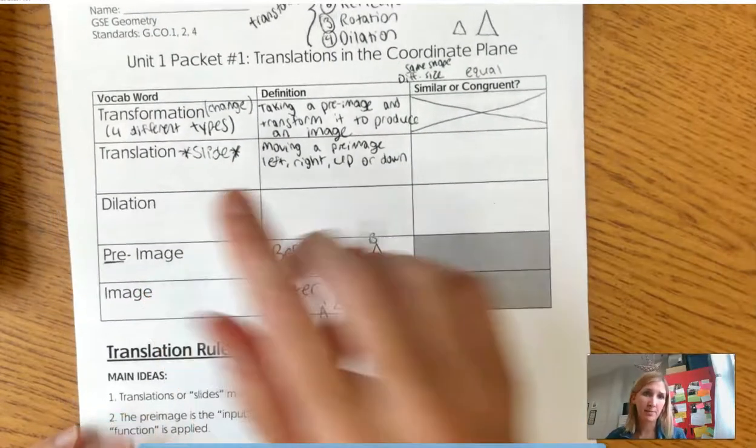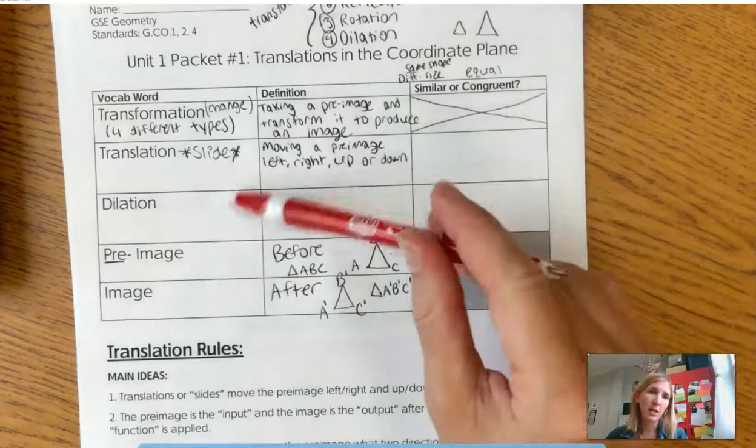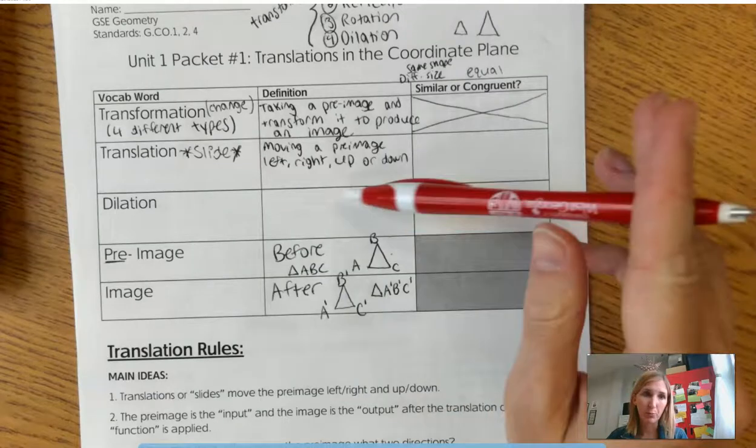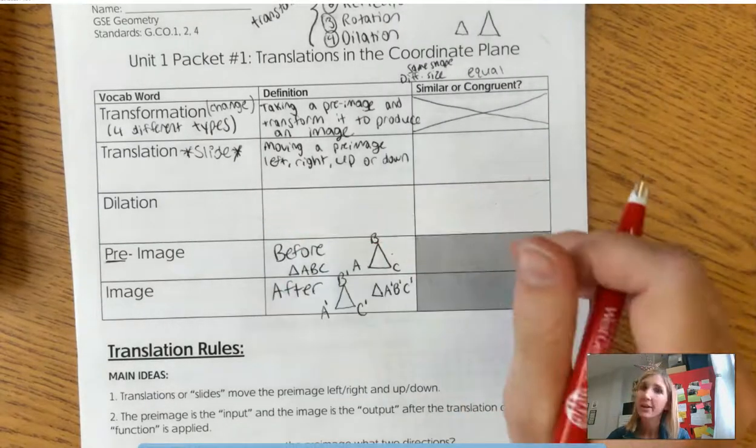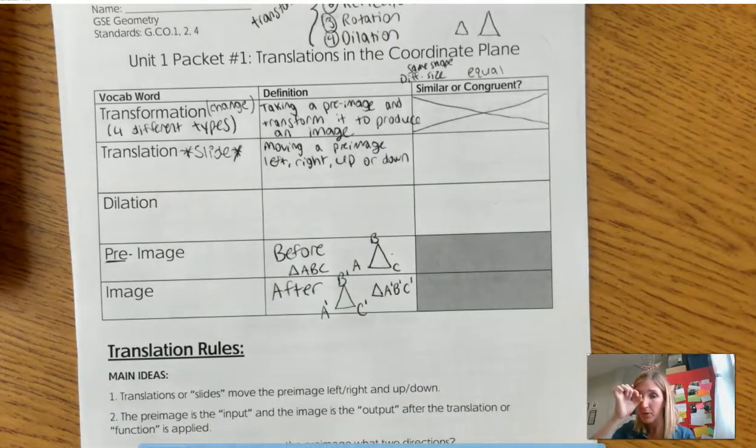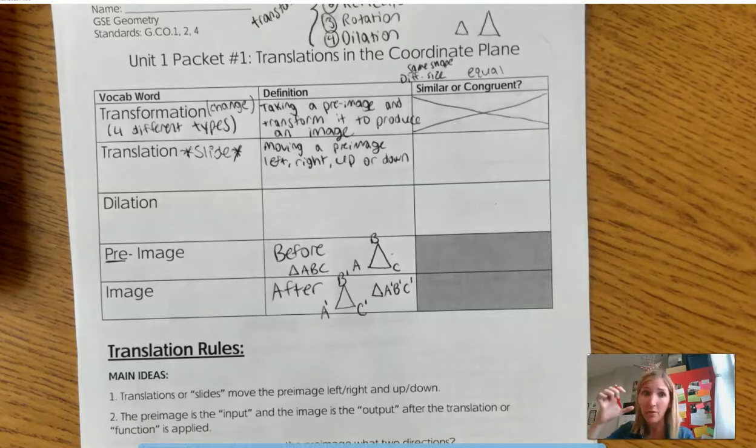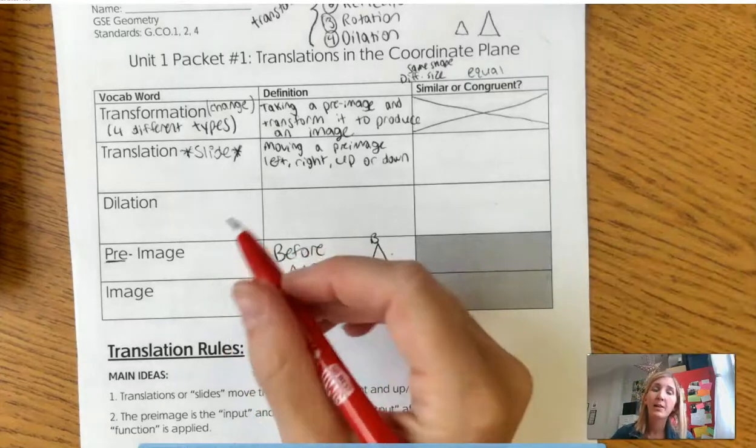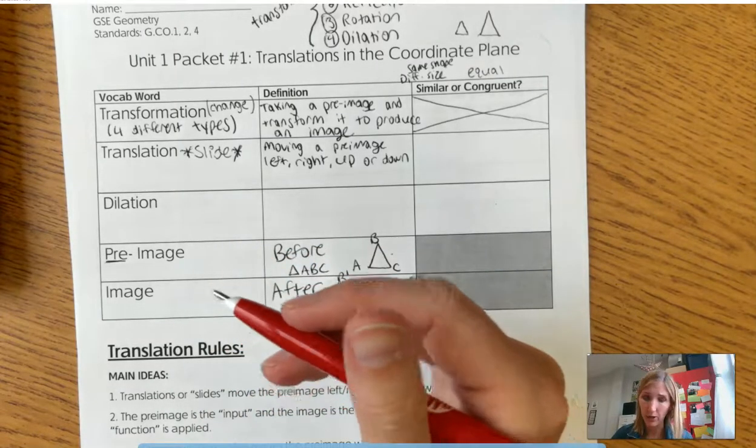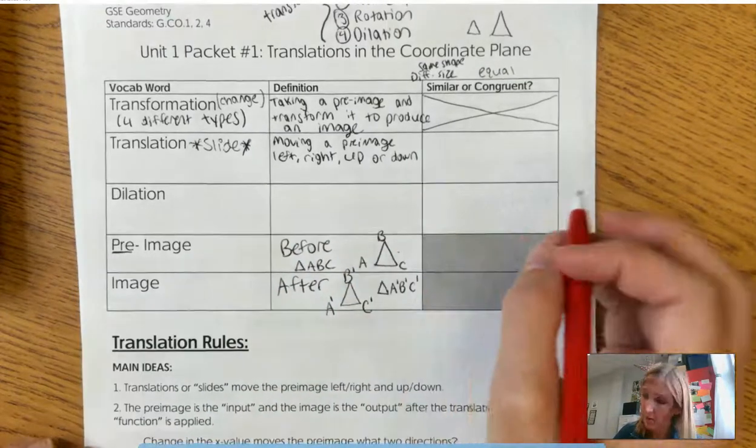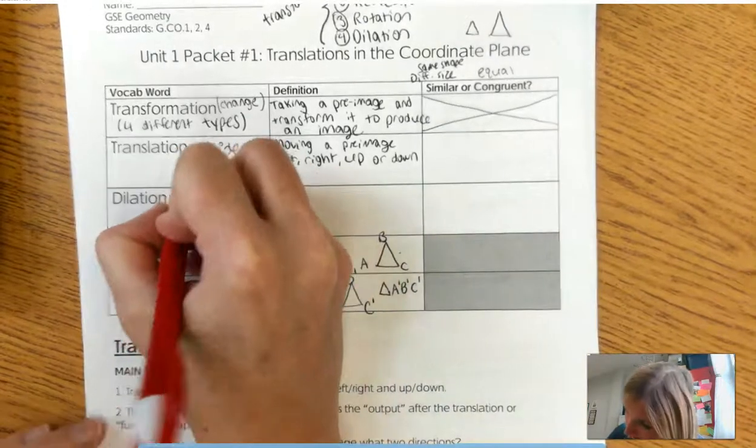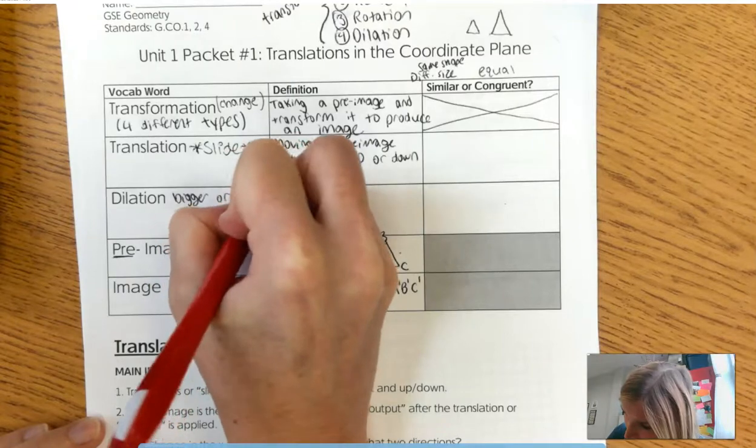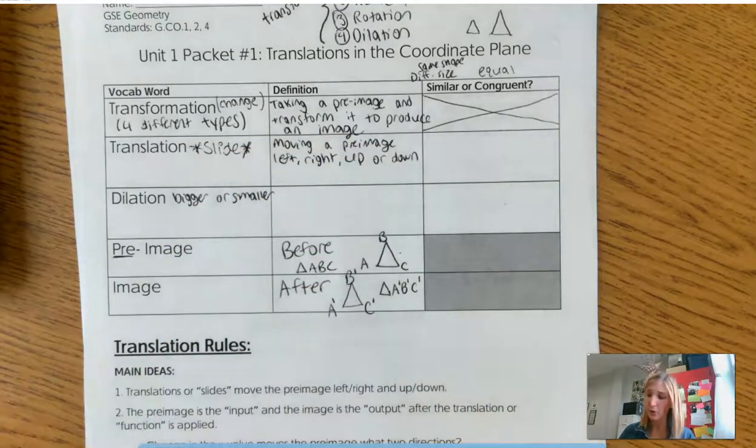Alright, dilation. I want you to think about going to the eye doctor and getting your eyes dilated. Have you ever looked at your pupils right after you got your eyes dilated? They're giant and creepy. So that makes the center of your eye bigger so that the eye doctor can look in at the back of the eye. So think about that in terms of a dilation. What a dilation means is you're either getting bigger or smaller, right, bigger or smaller.